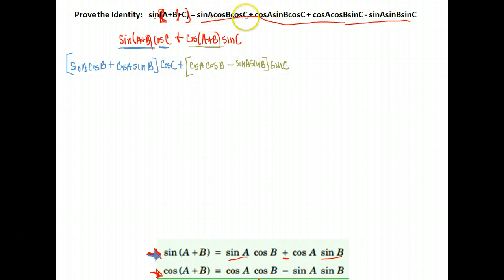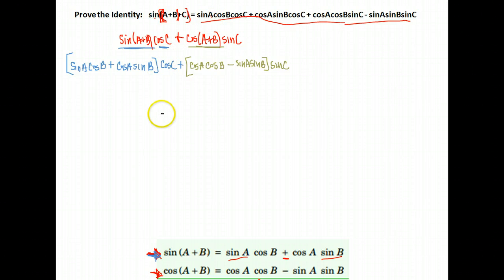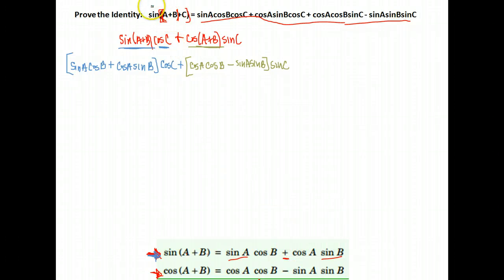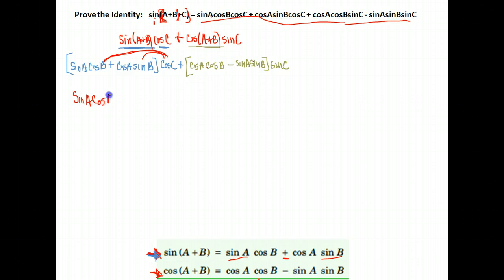I'm getting even closer to looking like the right-hand side. Everything is now just either an A, a B, or a C — nothing added together. I need to distribute to get rid of the brackets, multiplying cosine C times each of these terms and sine C times each of these terms. Starting with cosine C: cosine C times the first bracket gives me sine A, cosine B, cosine C — plus cosine A, sine B, cosine C.